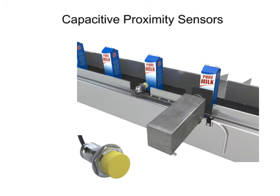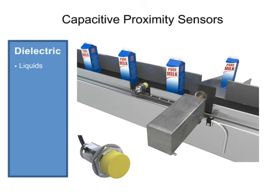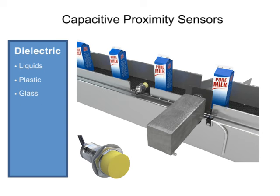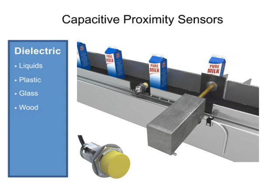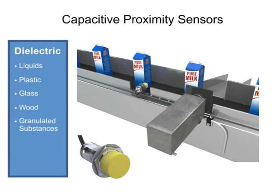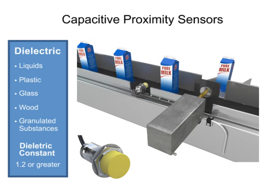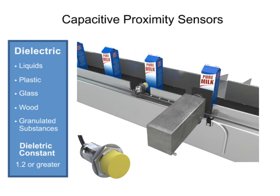Capacitive proximity sensors, on the other hand, can detect dielectric materials such as liquids, plastic, glass, wood, and granulated substances, as long as the material has a dielectric constant of 1.2 or more. Their range is from 3 mm to 15 mm depending on the dielectric material to be detected.